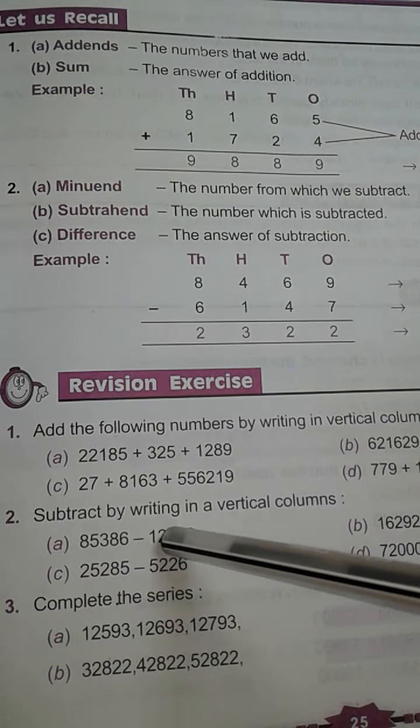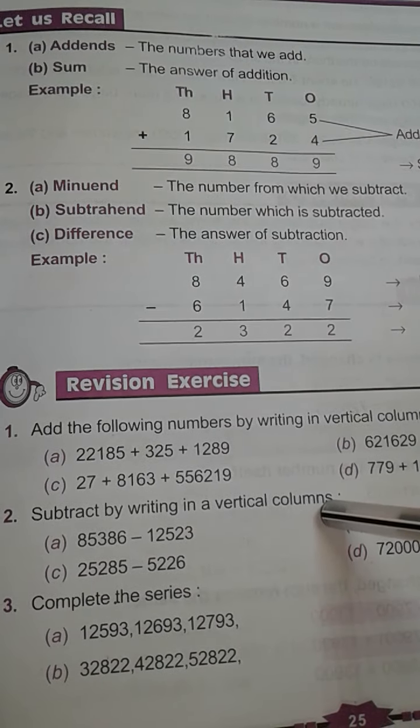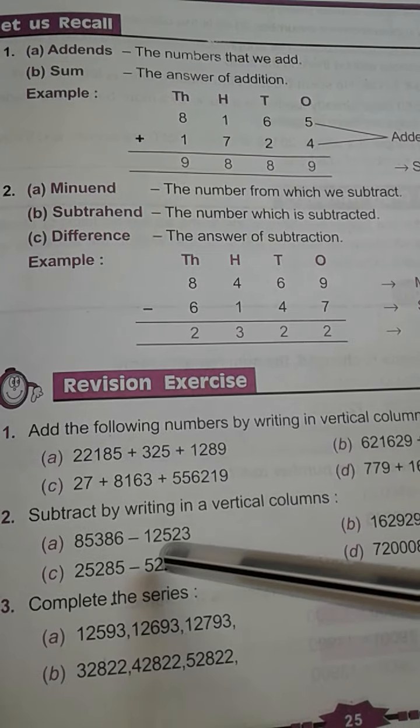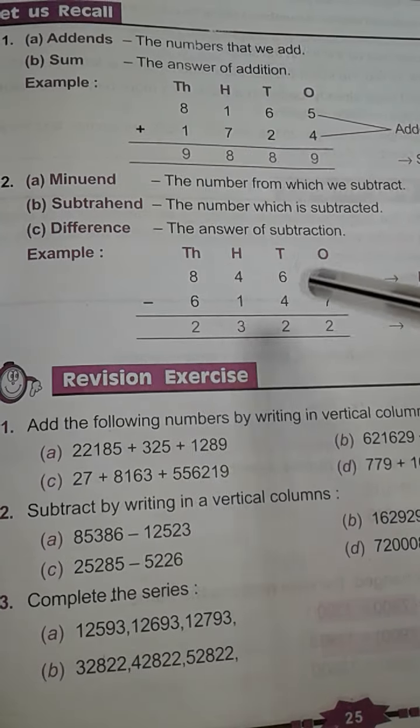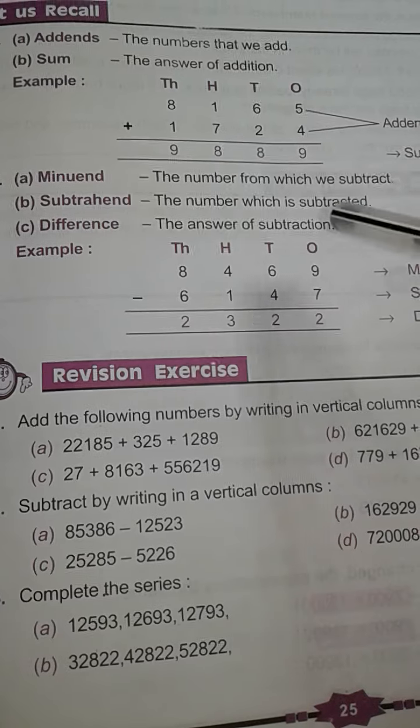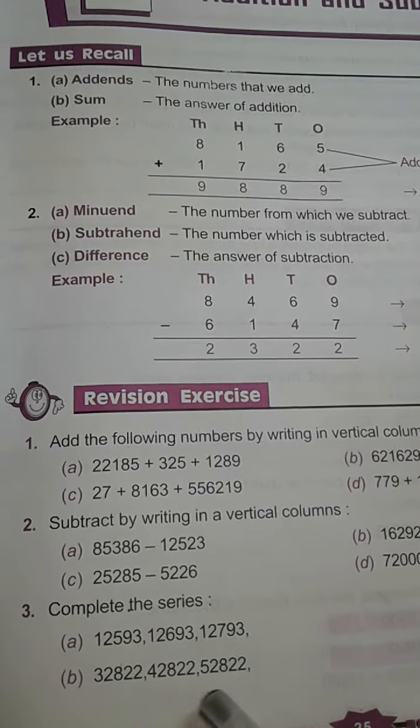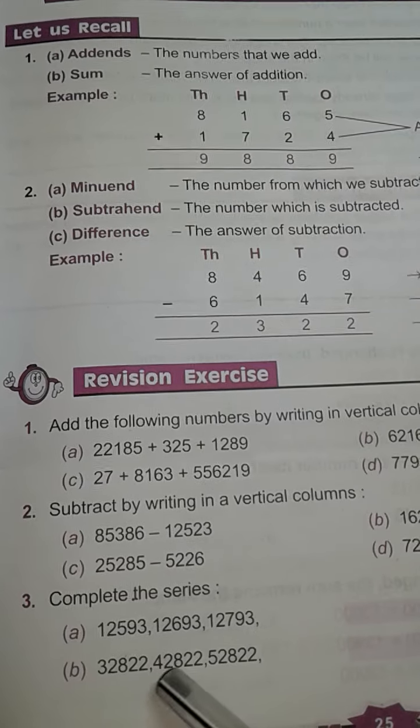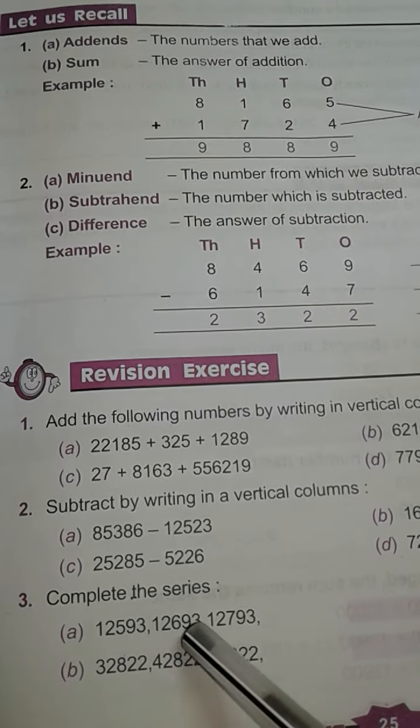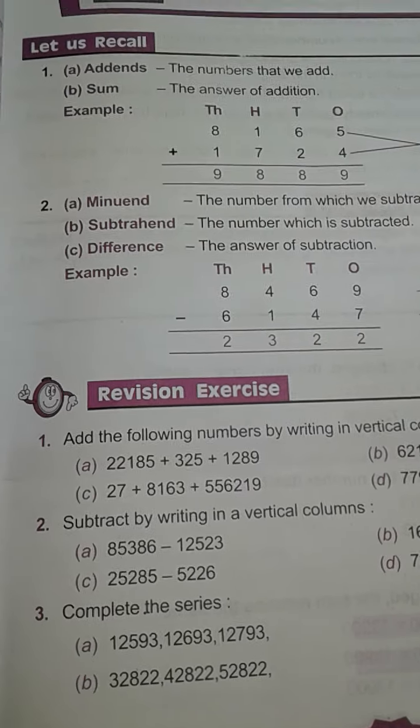Then subtract by writing in vertical columns. Means children, you have to write in columns. Then you subtract. Like this, you follow the examples. Complete the series. You mark the place value of each numbers. Then you complete the series.